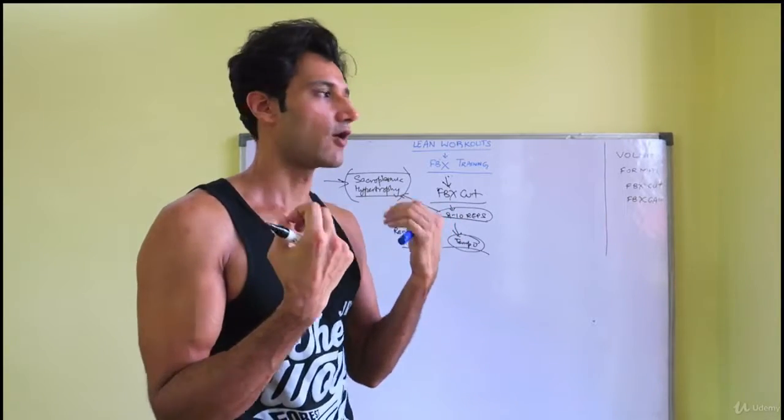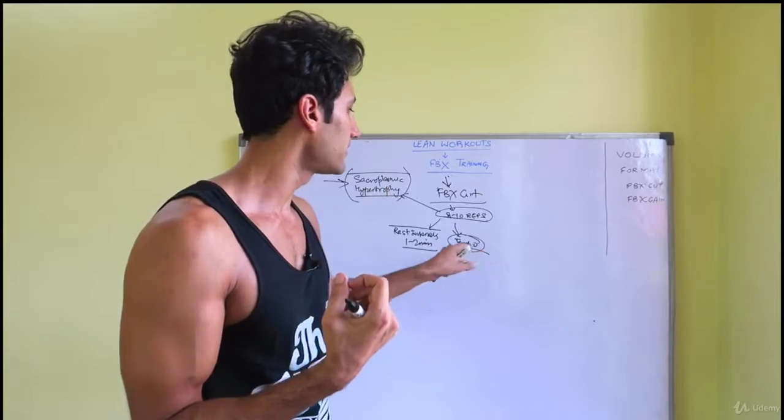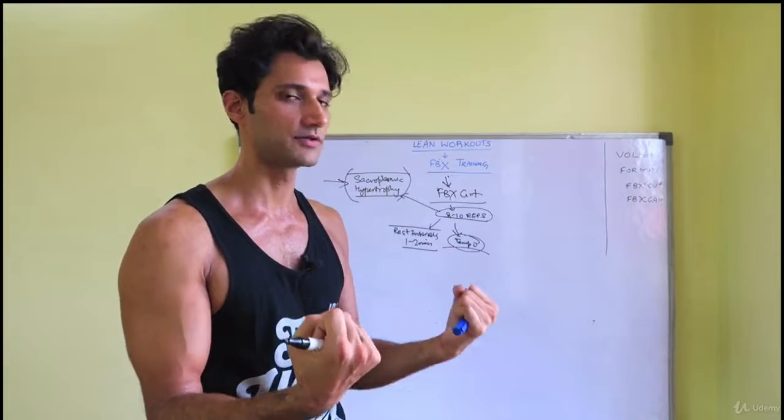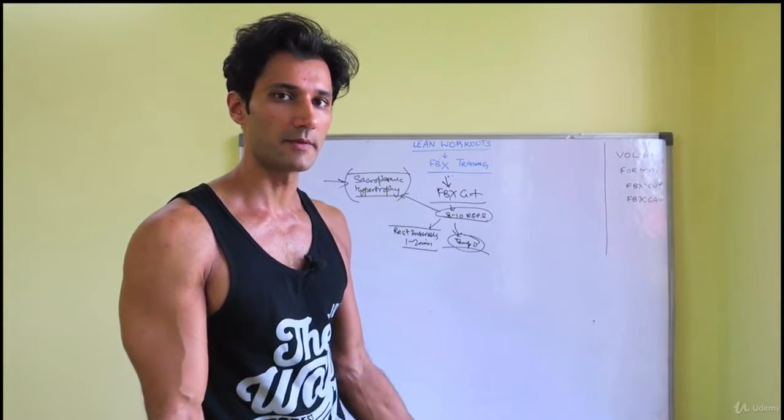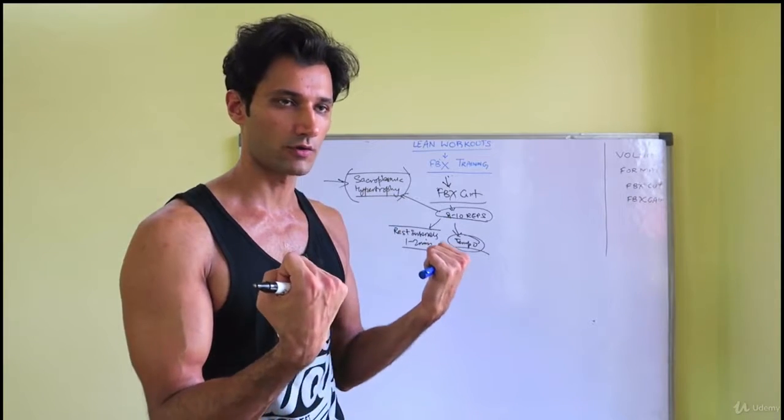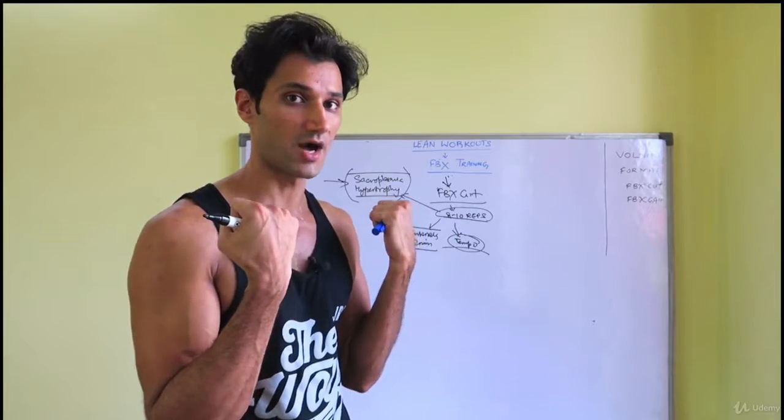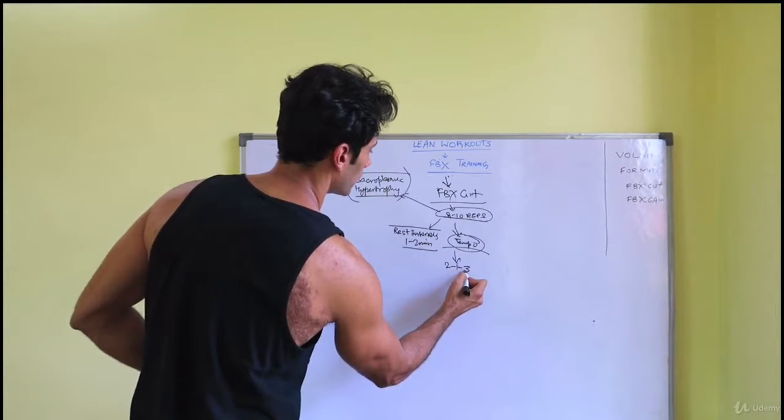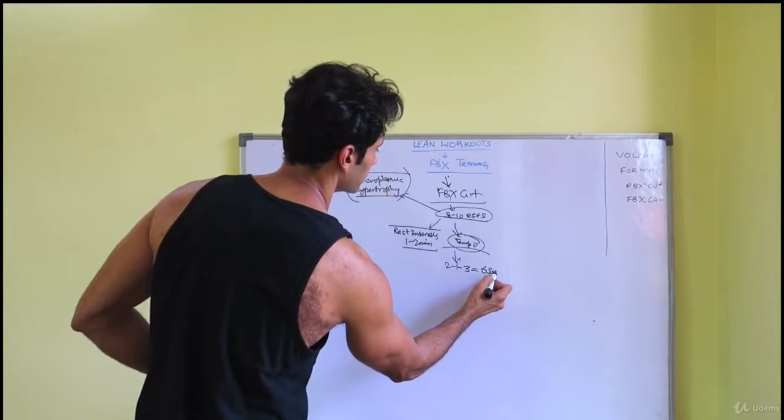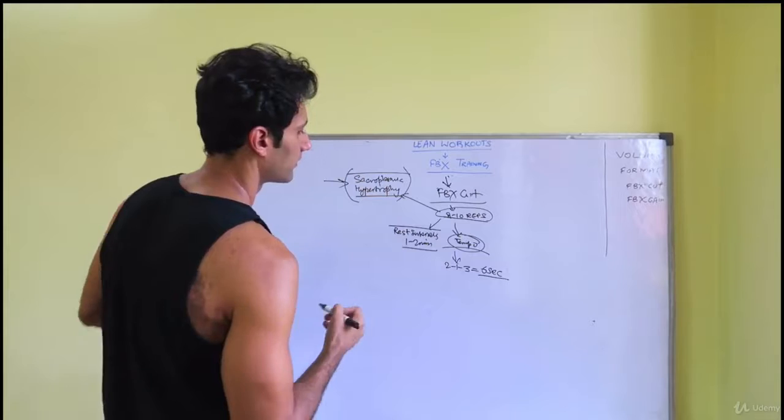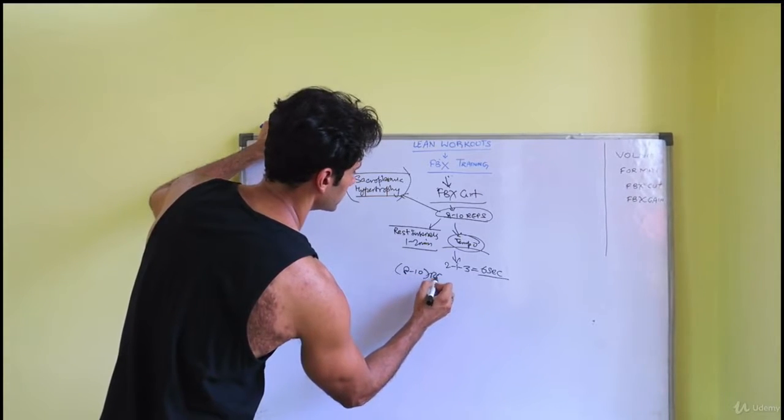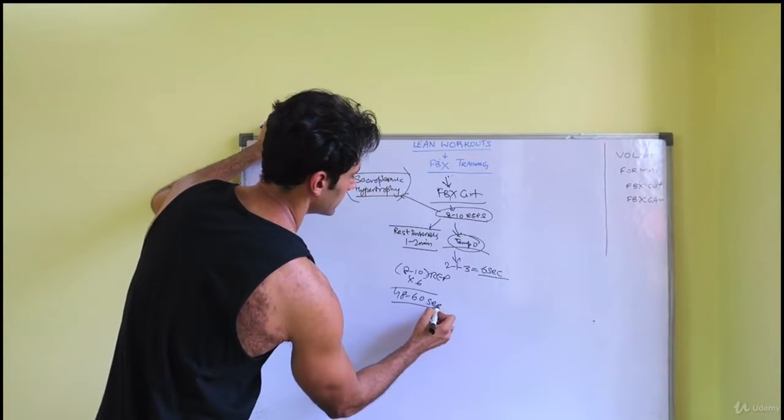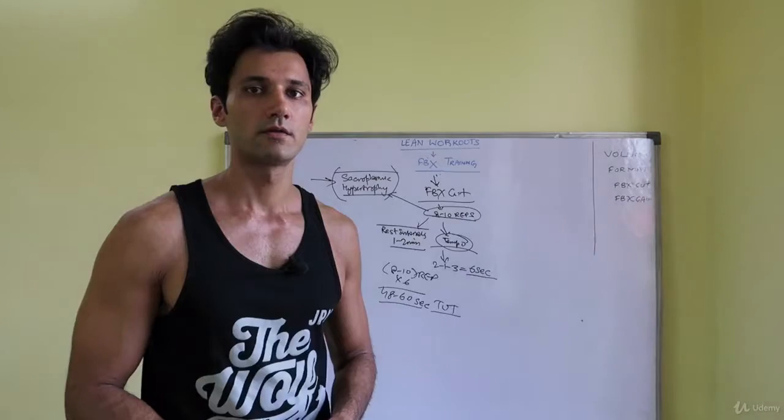With FPX cut, I recommend a three-second eccentric phase. You're going down one, two, three, then coming up one, two—that's the concentric phase. I'm holding it for one second, that is your isometric phase. So one repetition should take you six seconds. I'm doing eight to ten repetitions times six seconds, that is 48 to 60 seconds time under tension.